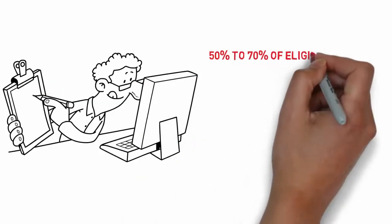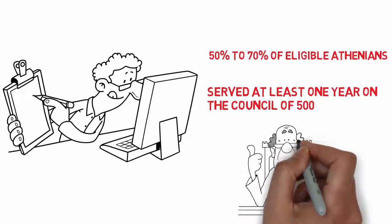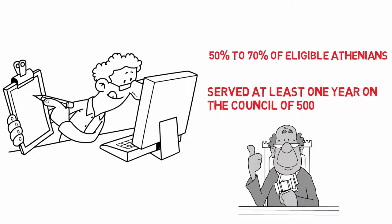Now, it's estimated that 50 to 70 percent of eligible Athenians served at least one year on the Council 500, their branch of government responsible for developing legislation.